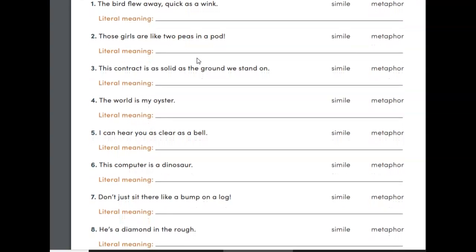How about this one? Those girls are like two peas in a pod. Is this a simile or a metaphor? This was a simile. It used like to compare two things. It's comparing the girls to two peas. So what does this mean? If the girls are like two peas in a pod, that means that they're very close to one another. They're very similar, because two peas in a pod, which is where they grow in, would be very similar. They'd be very close to one another, just like these girls.